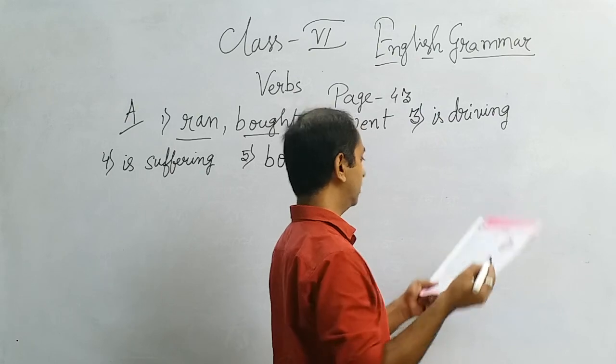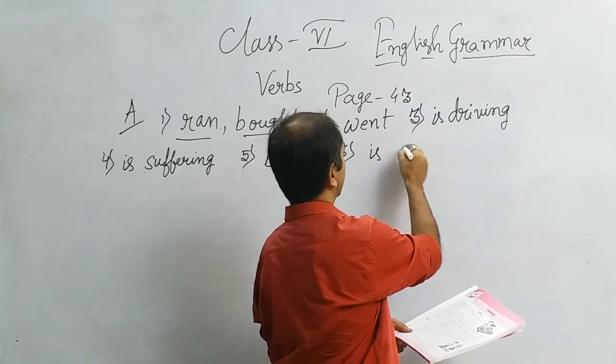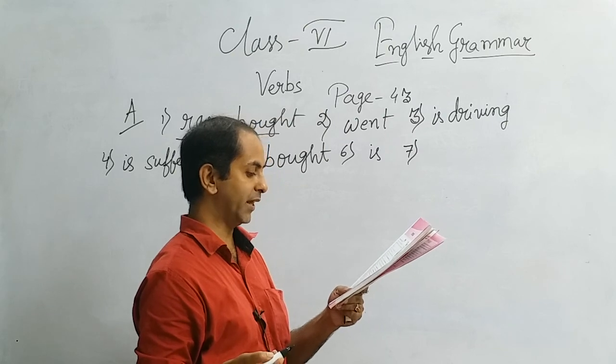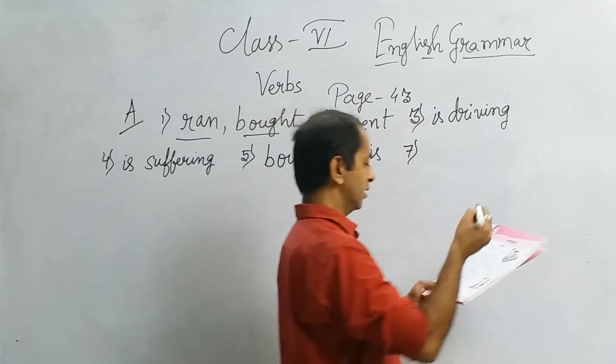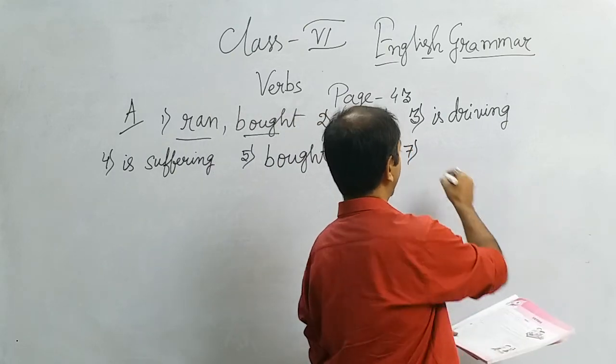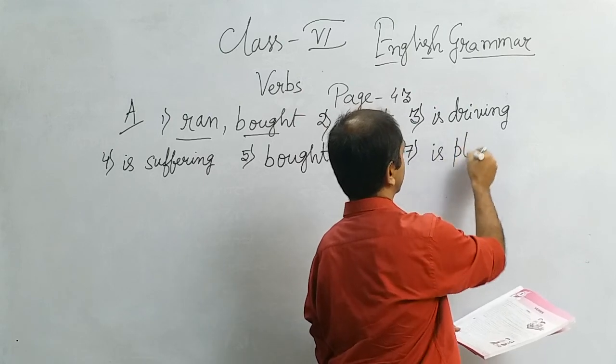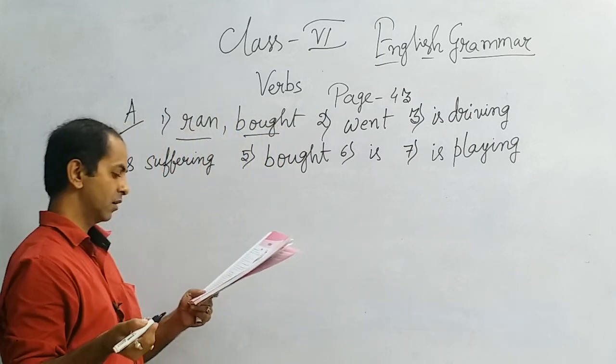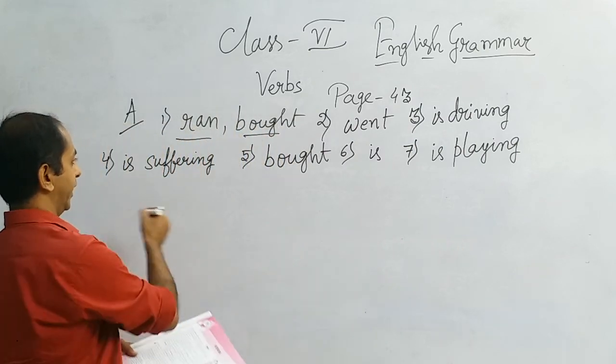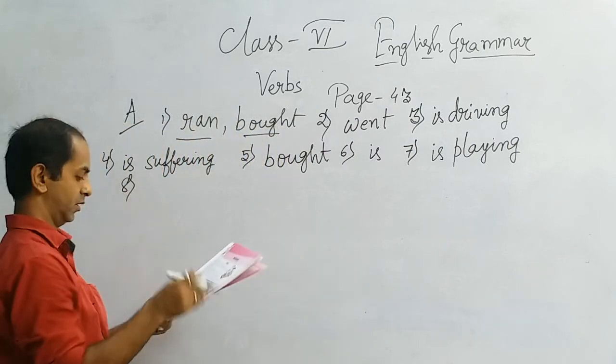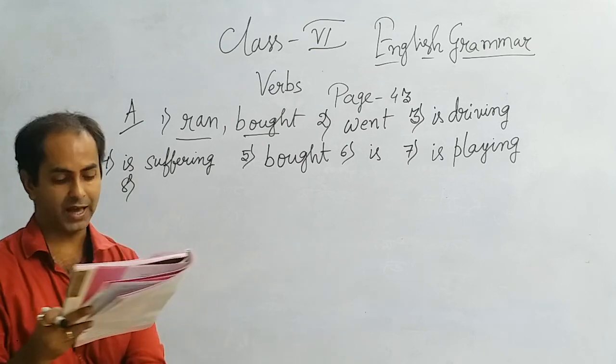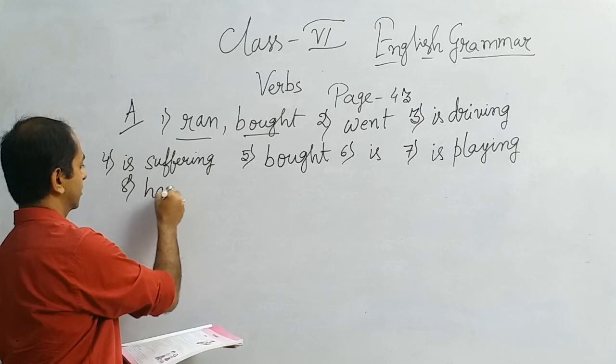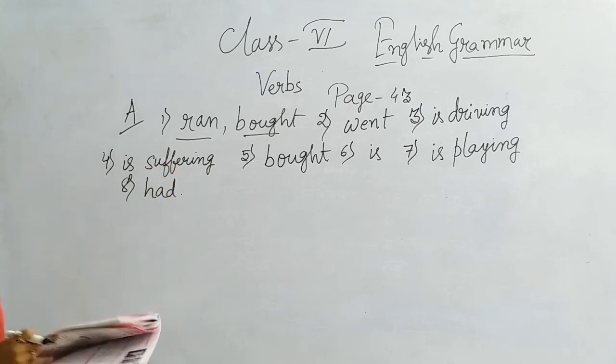Number 6: Rita is a brilliant girl. Is. Number 7: The Indian cricket team is playing against Australia today. Is playing. Number 8: Stephen Hawking had a sharp mind. Had. So these are the answers you can see.